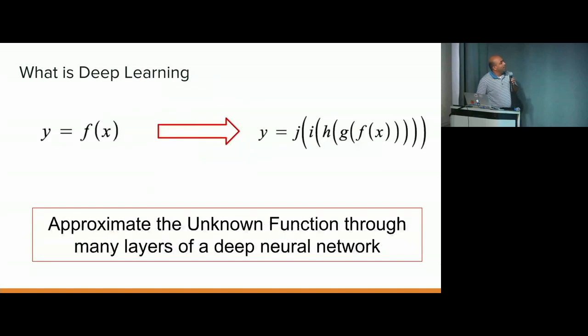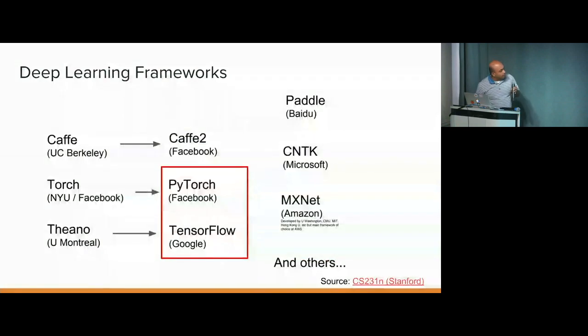So then what is deep learning? Deep learning is just applying many, many layers of this simple machine learning network we saw. So it is just function upon function upon function of trying to approximate this bigger unknown function. Okay, so this slide as you see is taken from CS231 Stanford.